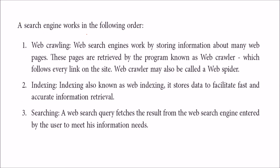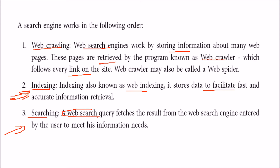A search engine works in a specific order: first, a web crawler retrieves informative pages by following hyperlinks; then indexing is done to facilitate fast and accurate information retrieval; and finally, searching fetches the content matching the query from all that has been crawled and indexed. You cannot search all pages in the world without this algorithm — it would take a humongous amount of time.